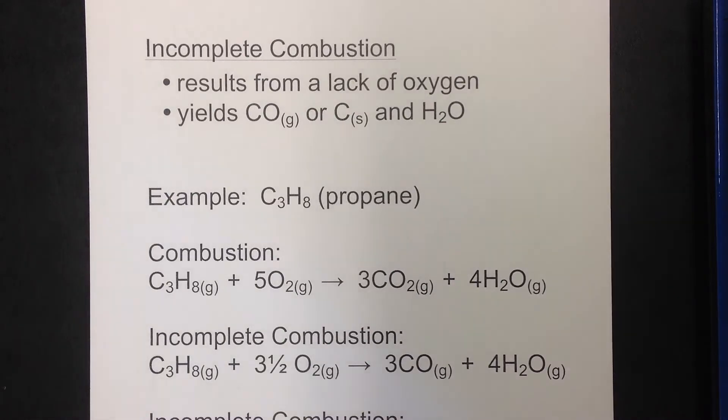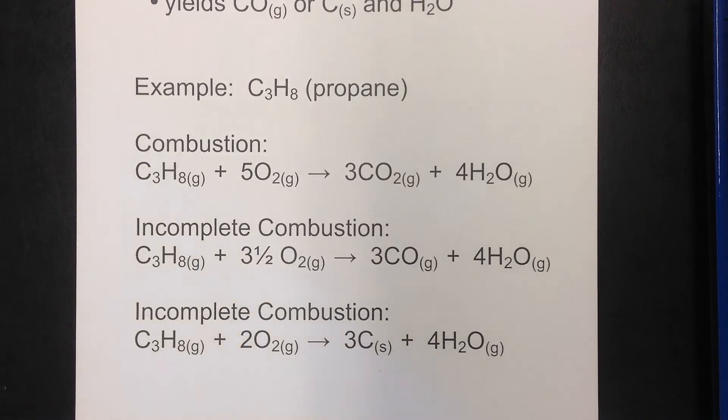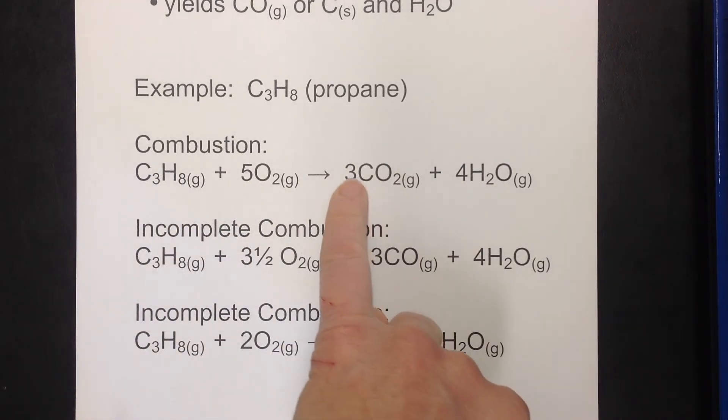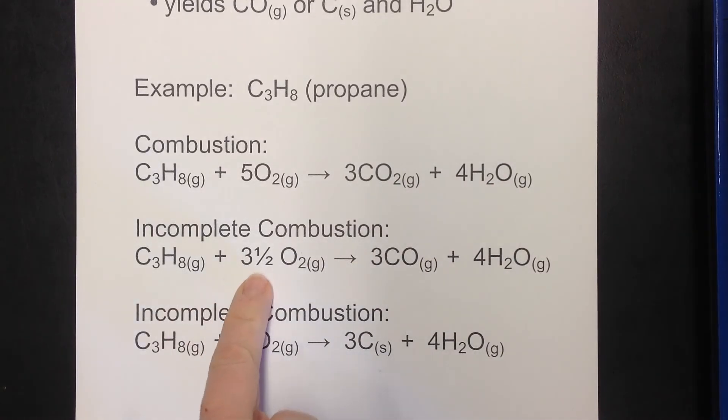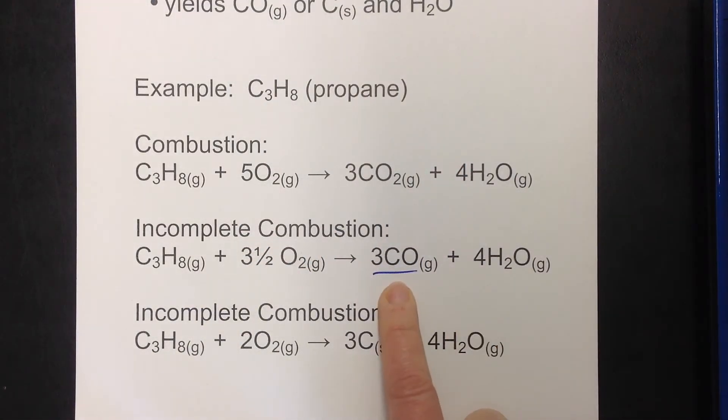So just to show you how this happens, I'm going to use propane as an example. If you have just a regular combustion reaction with propane, let's say you've got propane and you've got five molecules of oxygen gas. This is a complete combustion. You can see you get CO2 and H2O, everything's good. Now, if you cut that oxygen gas back, let's say to three and a half molecules, now you don't quite have enough for this reaction to run to completion. So you're actually going to get carbon monoxide.